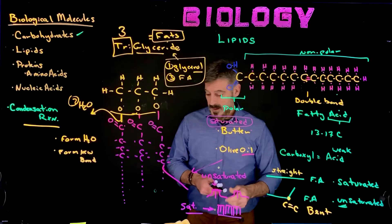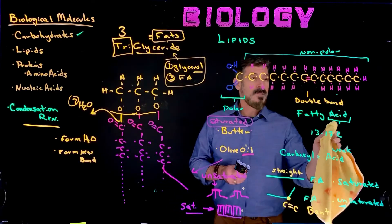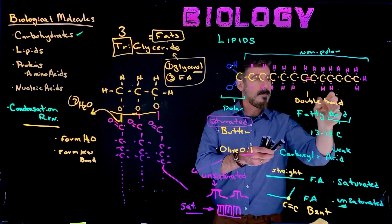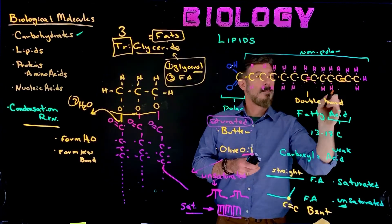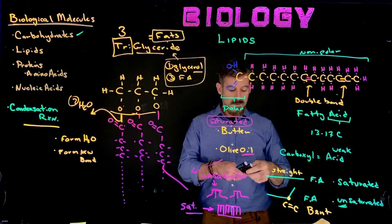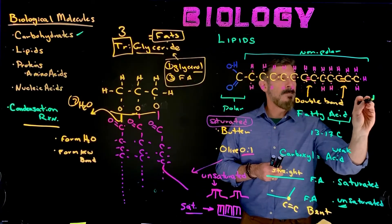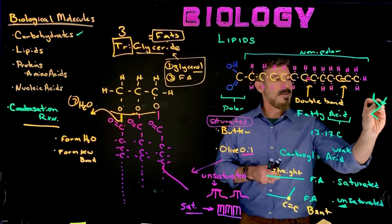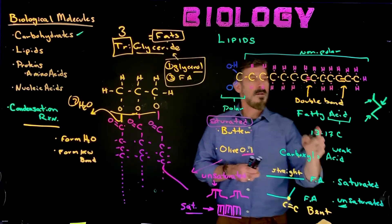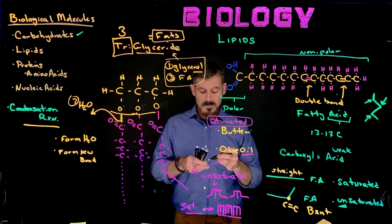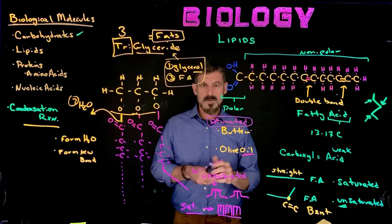And there can also be a type that is called a polyunsaturated. So if we had multiple double bonds, so double bonds in several locations, what that would do to the structure is then just cause it to bend several times. You would get multiple bends every time there was a carbon-carbon double bond. The structure would bend, and you can get more complex bended structures in that way.